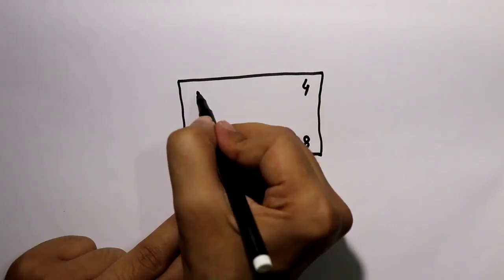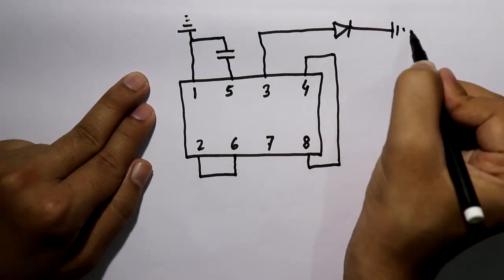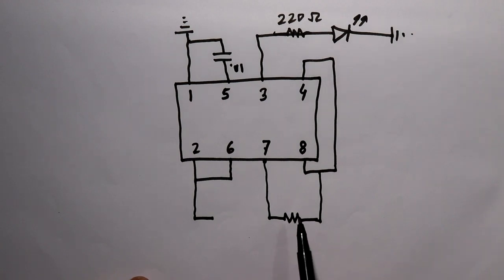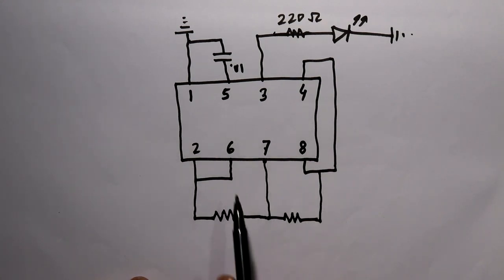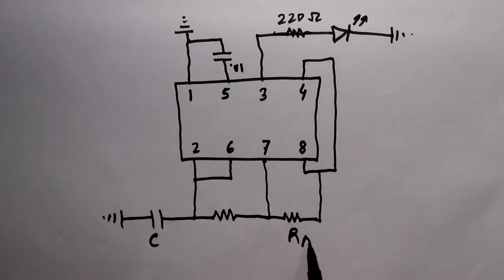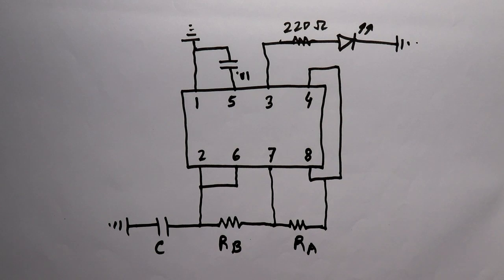The generation of a PWM signal is only possible in the astable mode. In the last video I have shown the astable mode with the internal circuit. As you know, in the astable mode a resistor RA is connected between pin number 7 and 8, another resistor RB is connected between pin 6 and 7, which is also connected to pin number 2, and then one capacitor C is connected to ground. These three devices — RA, RB, and C — will decide the frequency and the duty cycle of the output.